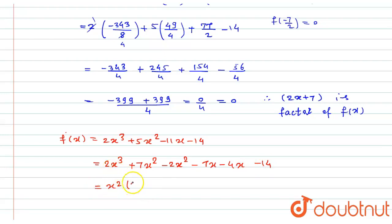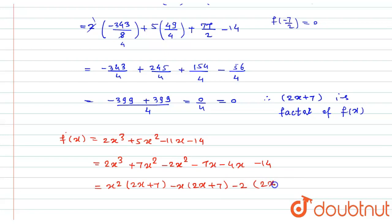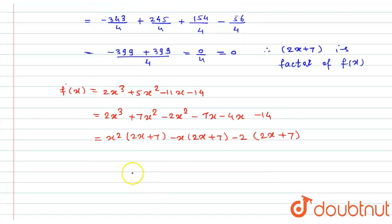Grouping: from the first two terms I take x² as common, giving x²(2x + 7). From the last two terms I take −2 as common, also giving −2(2x + 7). Both groups share the factor (2x + 7).